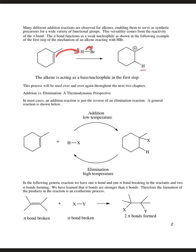That puts the hydrogen on the less substituted carbon — in this example with HBr — and the bromide then adds to the more substituted carbon in the next step of the mechanism. The alkene is acting as a base/nucleophile in the first step, and this process will be used over and over throughout the next couple of chapters. At low temperature, we can do the addition of HX across the double bond; at high temperature, we can do the elimination of HX to form the double bond.